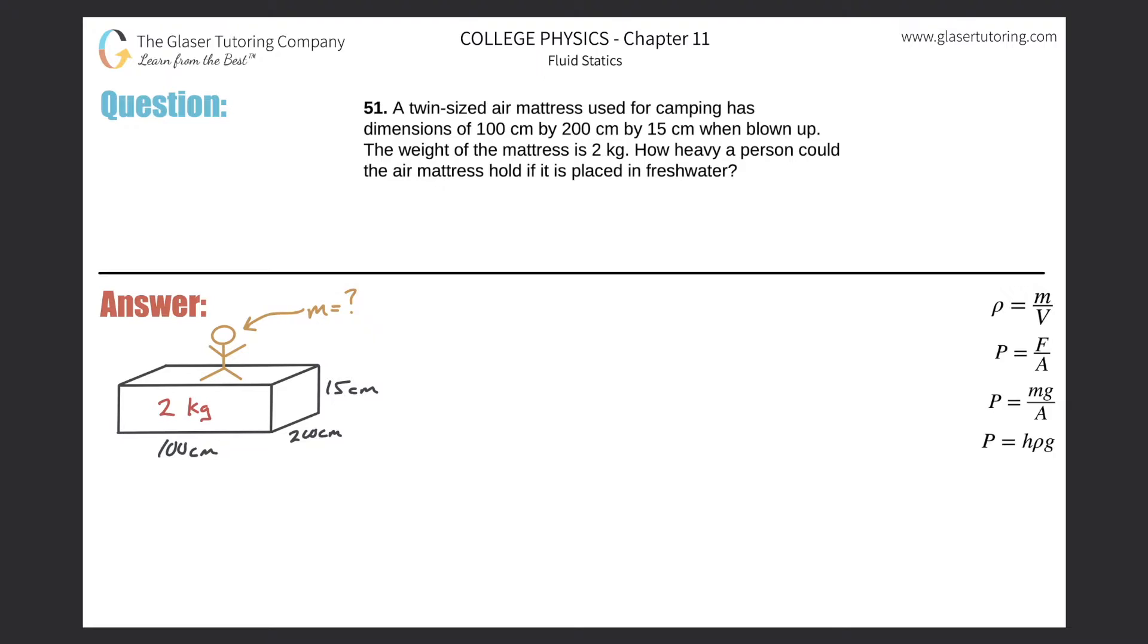Number 51: A twin-sized air mattress used for camping has dimensions of 100 centimeters by 200 centimeters by 15 centimeters when blown up. The weight of the mattress is 2 kilograms, meaning they really meant the mass of the mattress. How heavy a person could the air mattress hold if placed in fresh water?